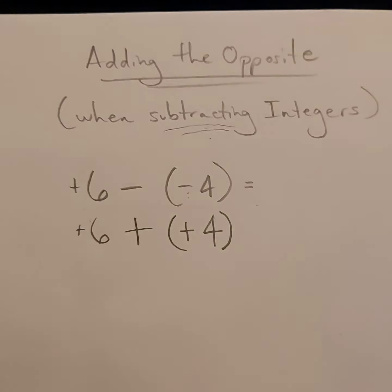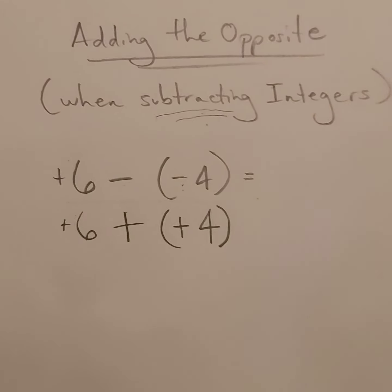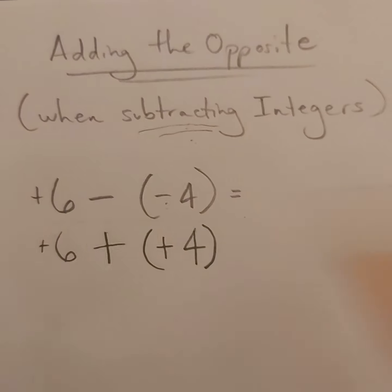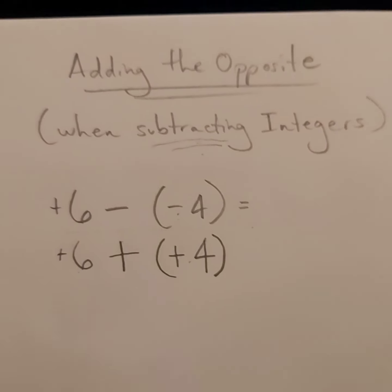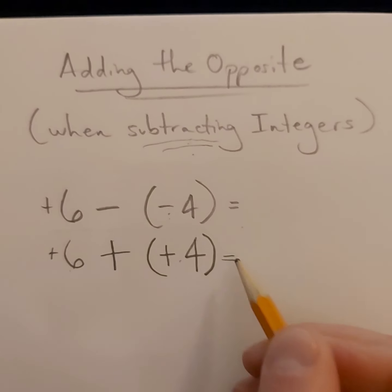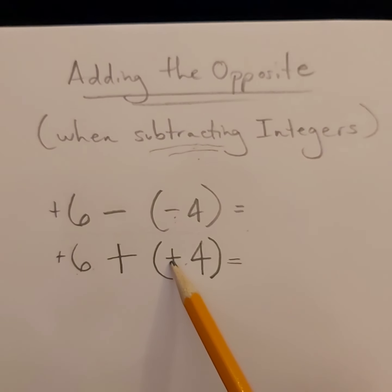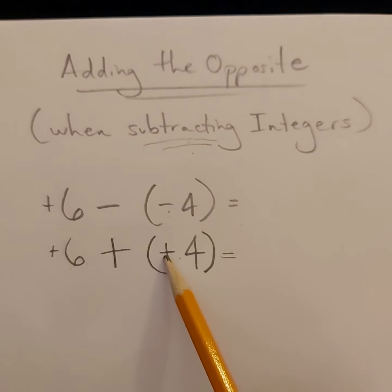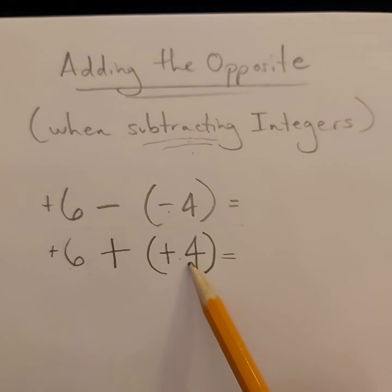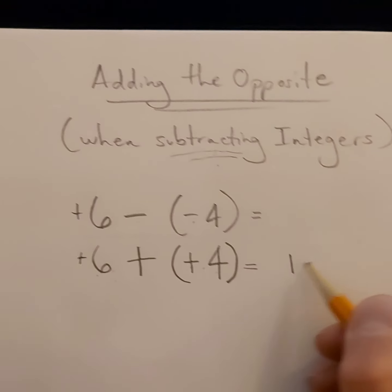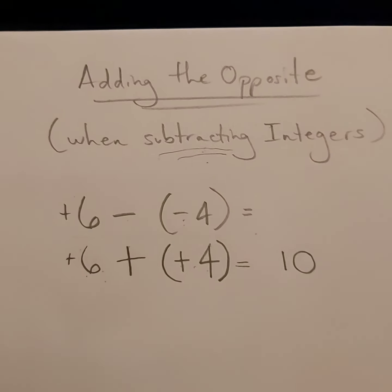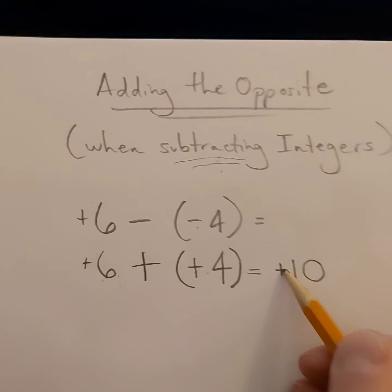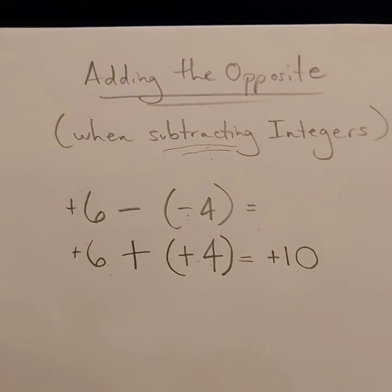Now, we can just use the same rules that we used before. So in this case, both numbers have the same sign, and when we have an addition sentence where two numbers have the same sign, we simply add them together. So six plus four, which equals 10, and I'm gonna take the sign that those numbers already had, which is positive.